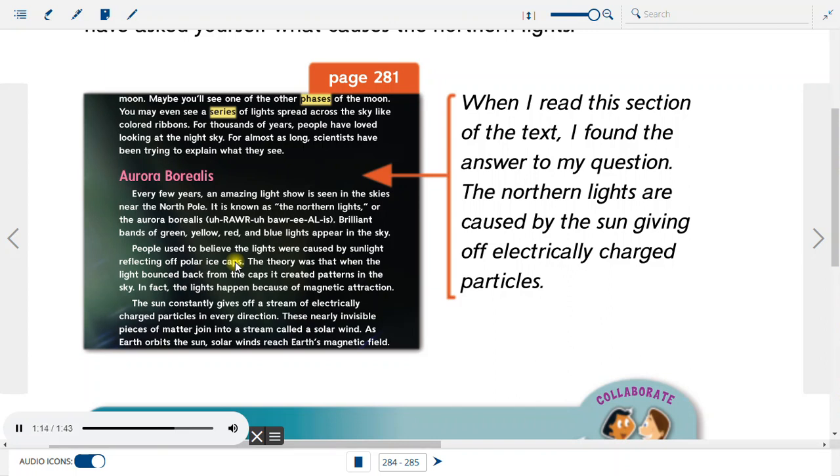In fact, the lights happen because of magnetic attraction. The sun constantly gives off a stream of electrically charged particles in every direction. These nearly invisible pieces of matter join into a stream called a solar wind. When I read this section of the text, I found the answer to my question. The Northern Lights are caused by the sun giving off electrically charged particles.